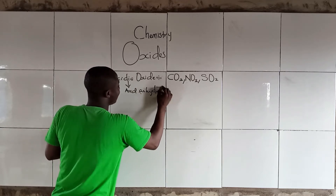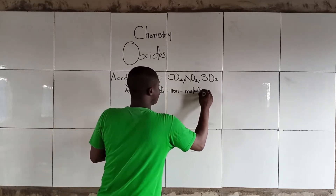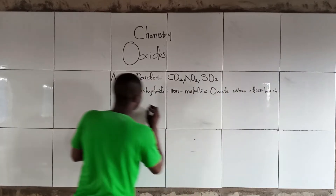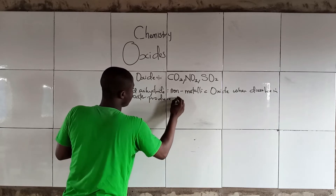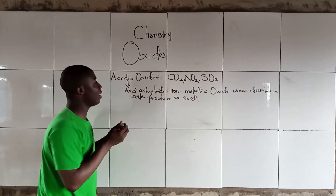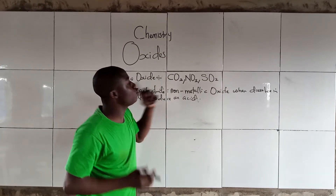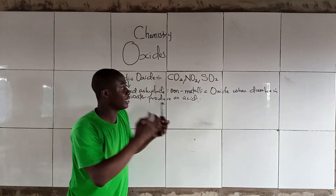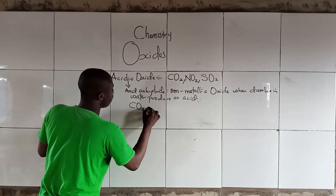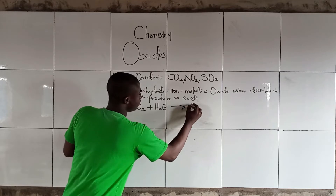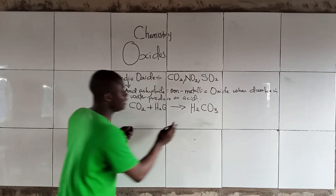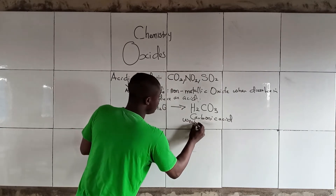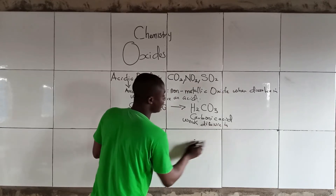What are Acid Anhydrides? Acid Anhydrides are non-metallic oxides. When dissolved in water, they produce an acid. For example, CO2 dissolving in water, which is H2O, gives us H2CO3. This acid is called Carbonic Acid. It is weak and it is dibasic in nature.